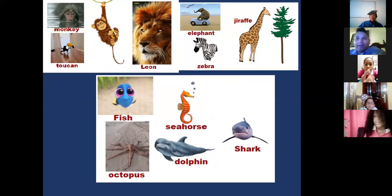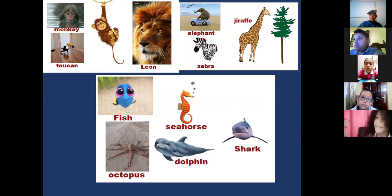Monkey, toucan, lion, elephant, tiger, zebra, shark, dolphin, octopus, seahorse, fish. They are in different habitats. And all habitats have different animals.